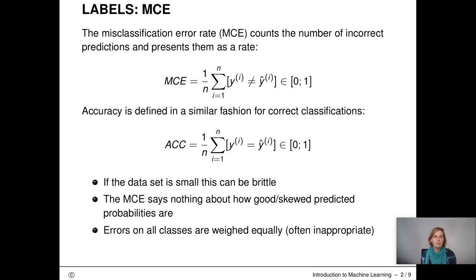The first measure we look at is one that deals with labels. This first measure is called misclassification error rate, which we denote by MCE. It simply counts the number of incorrect predictions and presents them as a rate. Accuracy is a measure that is doing just the same, just the other way around. So it just counts the correct classifications instead of the incorrect classifications. These two measures are quite intuitive, however they come with some issues.